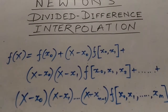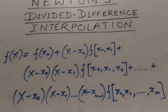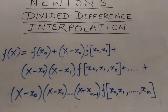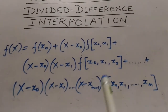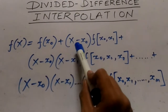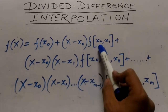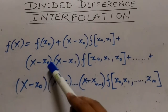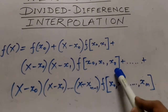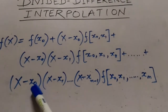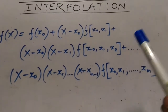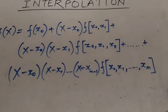Now let us move on to Newton's divided difference interpolation formula. The formula goes like this: f(x) equals f(x0) plus (x minus x0) times f(x0, x1) plus (x minus x0)(x minus x1) times f(x0, x1, x2) plus ... continuing up to (x minus x0)(x minus x1)...(x minus x_{n-1}) times f(x0, x1, ..., xn).